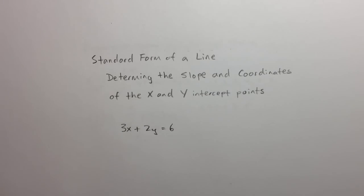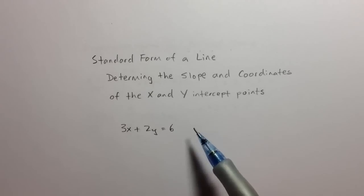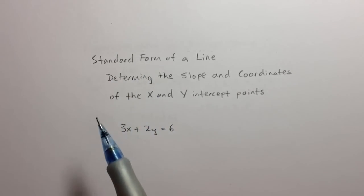Hey guys, in this lesson I would like to teach you how to find the slope and coordinates of the x and y intercept points for any linear equation, such as the one I have here, 3x plus 2y equals 6, and in the meanwhile I'm going to show you also how to put this equation into standard form.